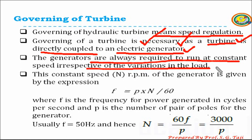We cannot control the input power in the form of mechanical energy, but we can control whatever the hydraulic energy we are going to give as an input to the turbine. So ultimately we are going to control the input as hydraulic energy. This hydraulic energy can be controlled either in the form of kinetic energy, or in case of a reaction turbine, we are going to control the pressure energy. In simple words, we are going to control the flow of water which is going to strike on the turbine or flow through the runner blades.